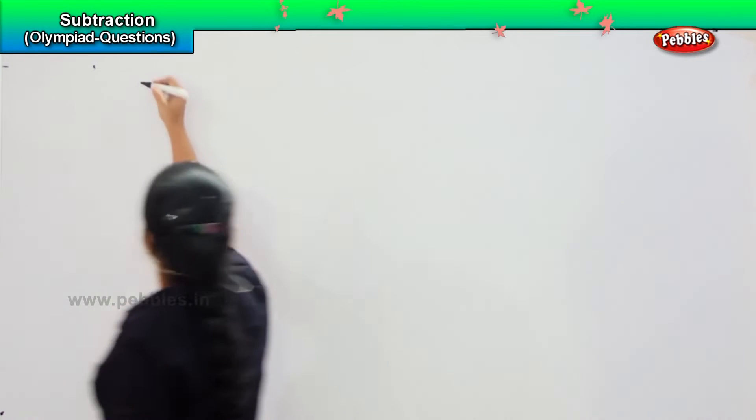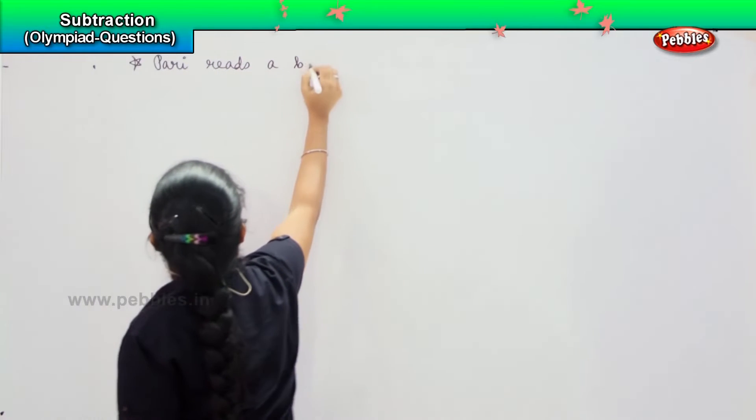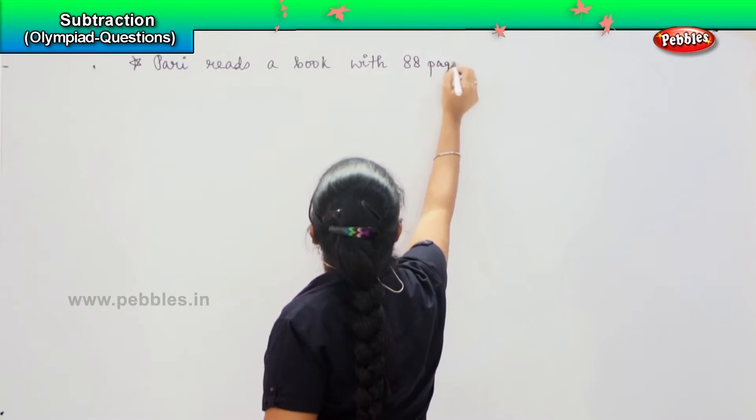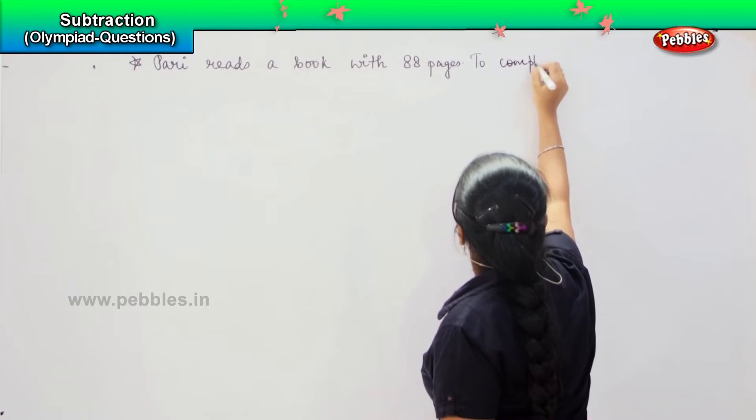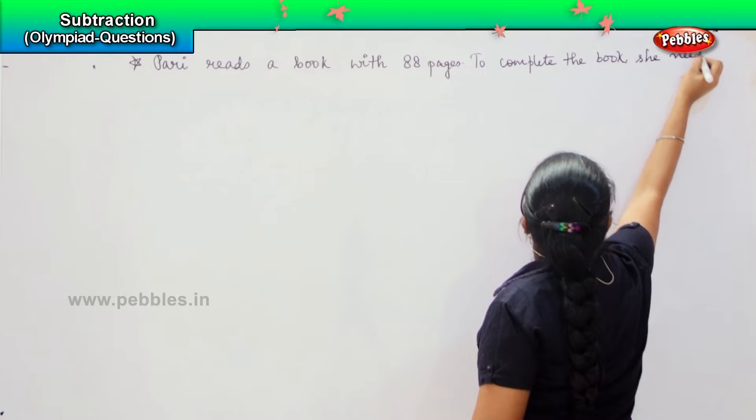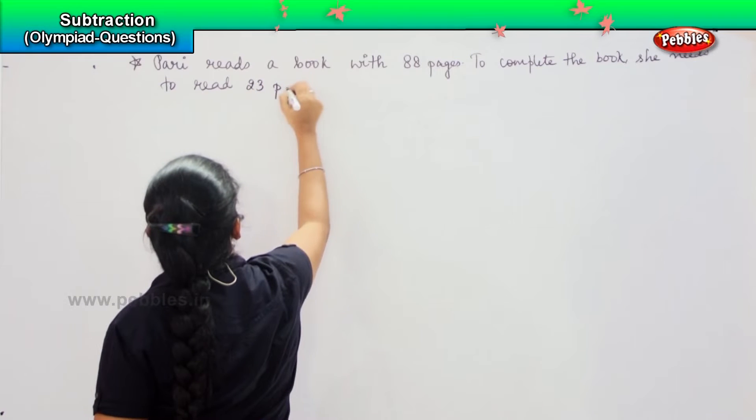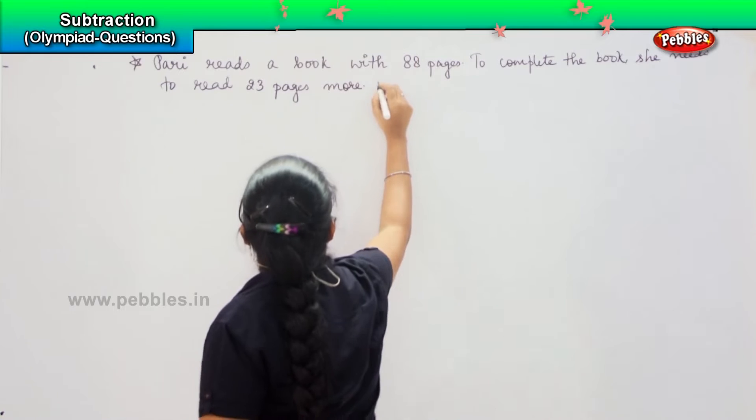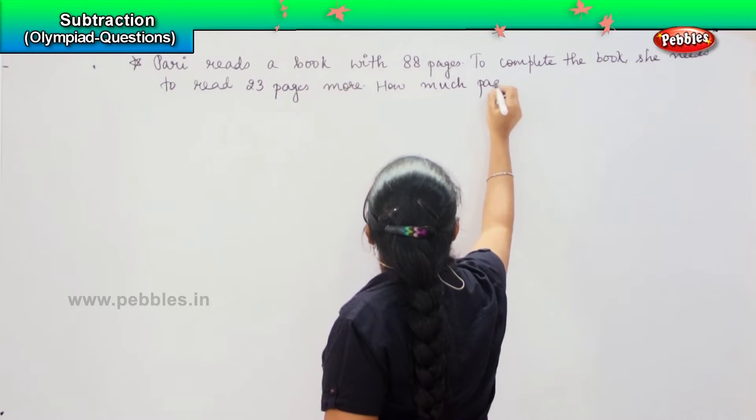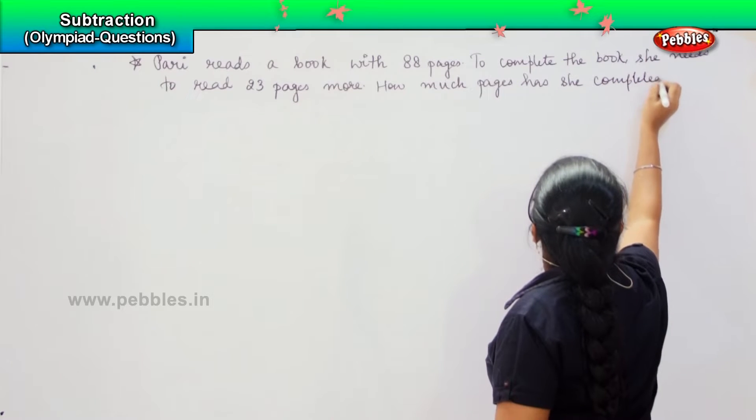The next question says, Pari reads a book with 88 pages. To complete the book, she needs to read 23 pages more.